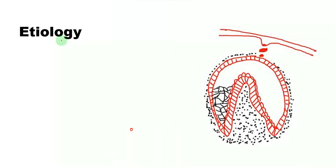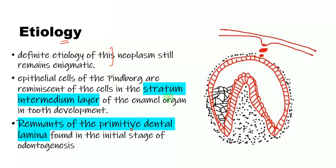Going into its etiology, the reason is largely unknown, but it is believed to arise from the cells of the stratum intermedium of the enamel organ or from the remnants of the dental lamina.